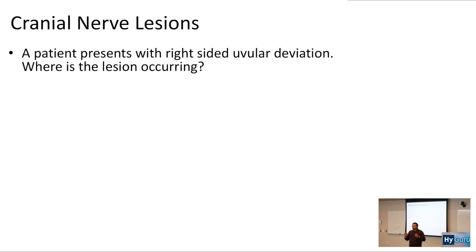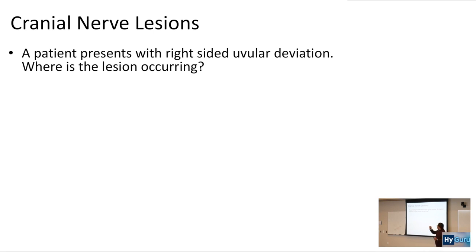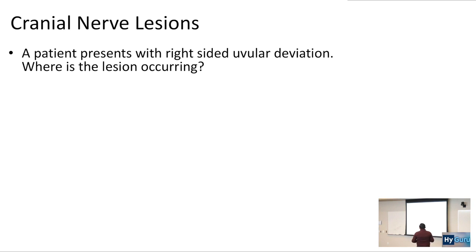Talking a little bit about cranial nerves. A patient presents with right-sided uvular deviation — their uvula is deviated to the right side. Where is the cranial nerve lesion if you have uvular deviation to the right side?